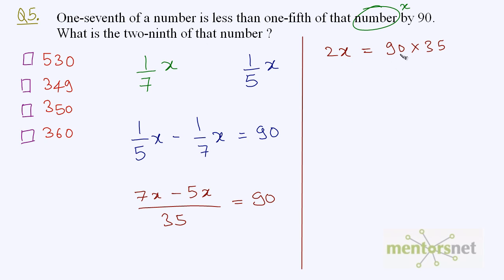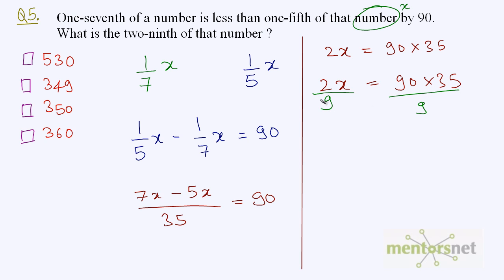We have to calculate two ninths of x. We will divide the equation 2x = 90 times 35 throughout by 9 on both sides. Thus we get 2x/9, which is two ninths of x. Since 9 times 10 is 90, this equals 35 times 10 = 350. So two ninths of x is 350.